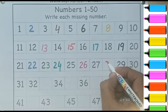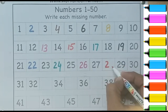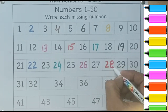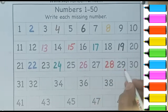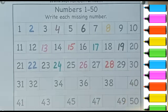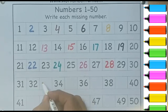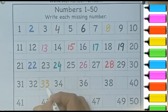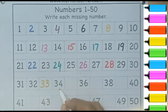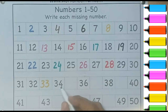28, 29, 30. Yellow color. 31, 32, 33, 34. Green color.